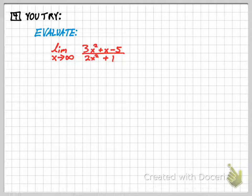Alright, the last you try of the year. Think carefully. I'd love to see everyone get this right. What is the limit as x approaches infinity of 3x squared plus x minus 5 all over 2x squared plus 1?